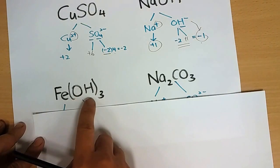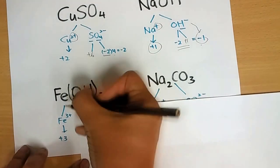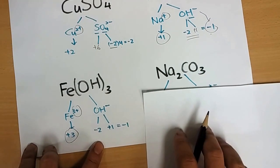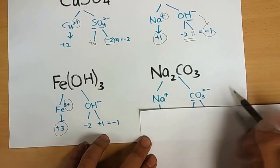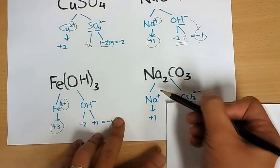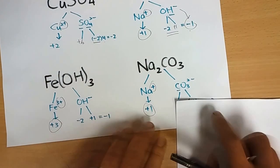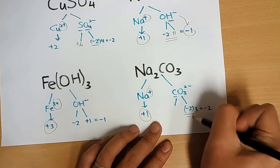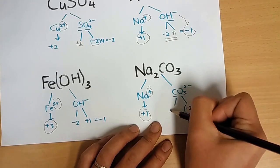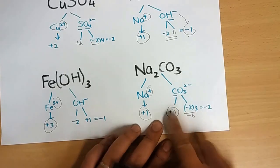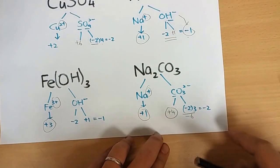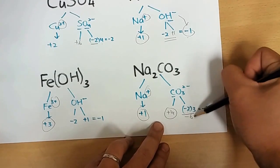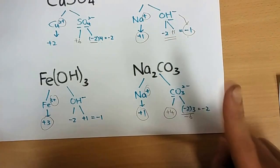For iron(III) hydroxide, break it up into the ions — the charge gives you the oxidation state. The oxidation state of carbon in carbonate must be plus four. Remember: the oxidation state of oxygen is minus two — not the sum of all the oxygens. We add them together only to work out the unknown. Oxidation state always refers to one atom.